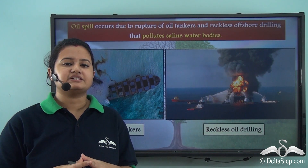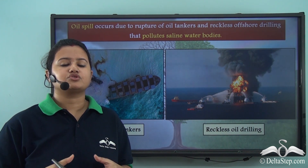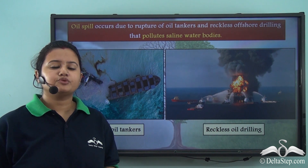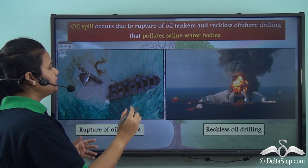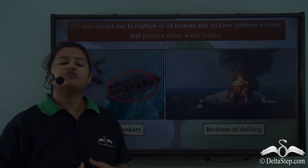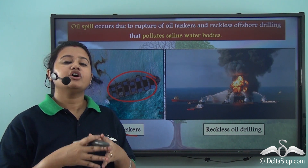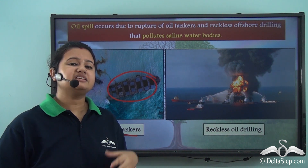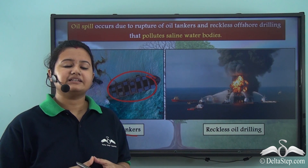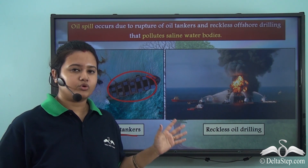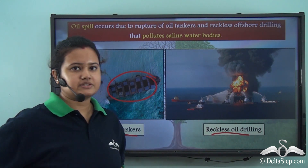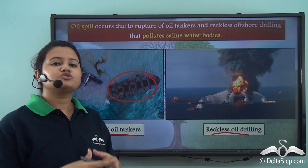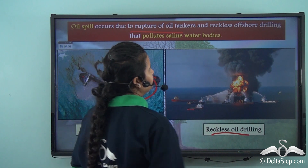We just watched a real life incident of an oil spill that occurred in the Gulf Coast of US on 28 April 2010. Now oil spill can occur due to various anthropogenic activities like rupture of large oil transporting vessels like oil tankers. Oceans and seas are storehouses of crude oil, natural gas, petroleum etc. Oil wells are dug in the seabed to extract these valuable resources, and sometimes crude oil or petroleum gets released due to reckless oil drilling operations.